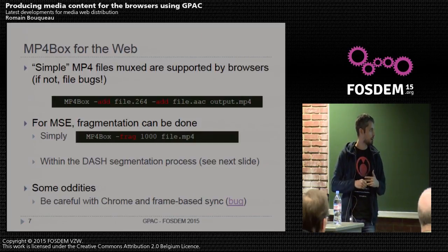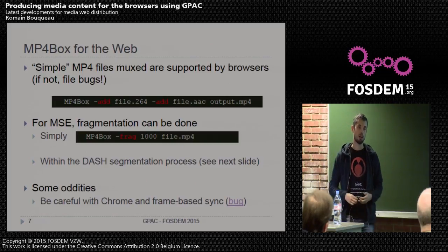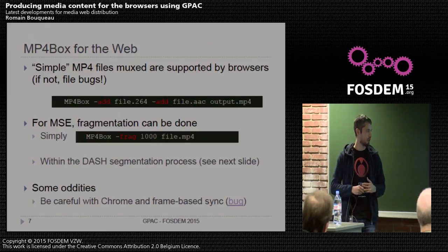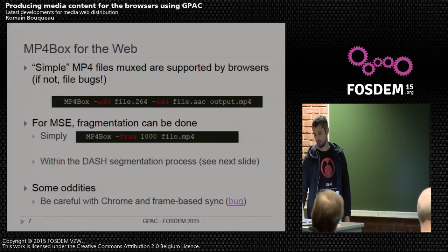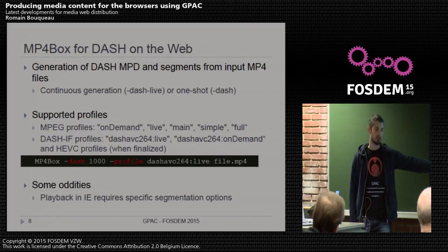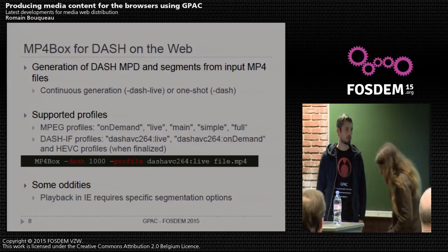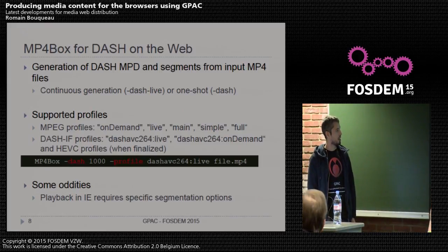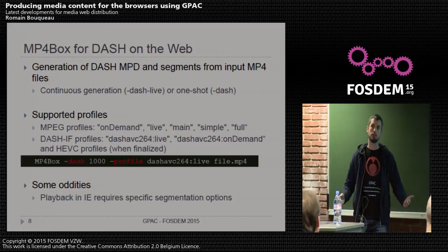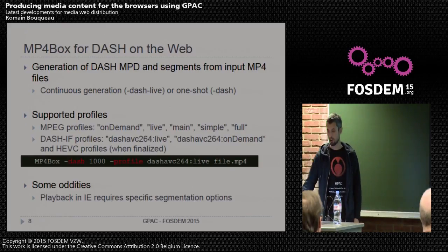Another possibility for fragmentation is to use the DASH streaming technology, which is adaptive streaming over HTTP — the new generation of protocols being deployed. Here is a command line where you can dash your content with one-second segments and fragments, letting you take advantage of players like dash.js that are freely available as open source.